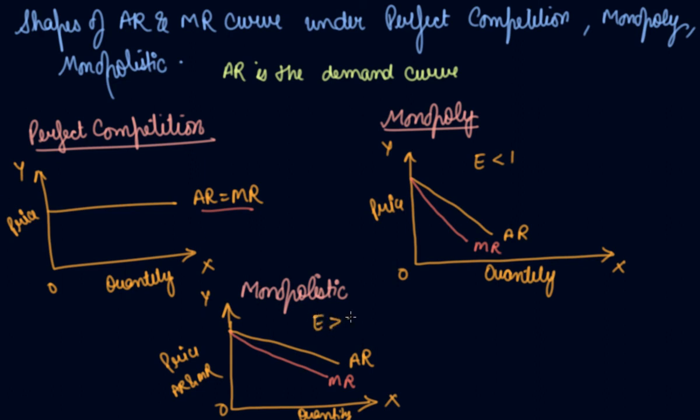Here the elasticity is greater than 1. Here elasticity is less than 1. Here elasticity is perfectly elastic, which is infinity. With change in price the quantity can be anything. And so these are the shapes of the AR and MR curve along the different forms of market.